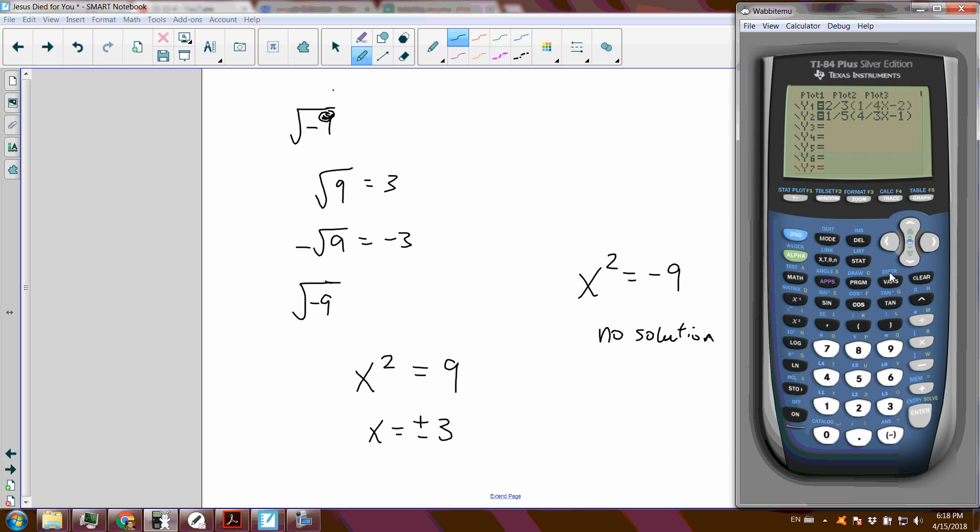Well, the graph of y equals x squared. It's never negative. It never goes below the x-axis. The smallest that x squared can be is zero. x squared can't be negative 9.